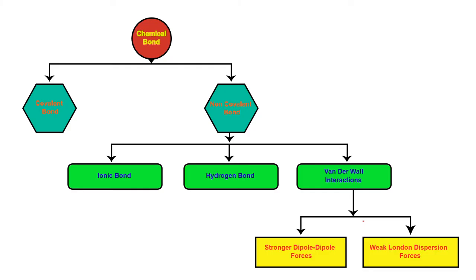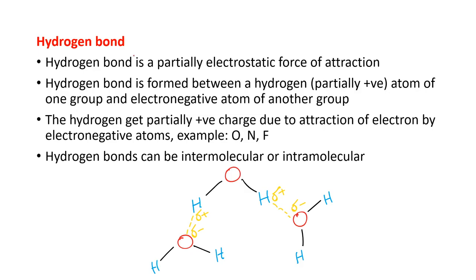This is a flow chart of the different types of chemical bonding we will discuss: covalent bonding, non-covalent bonding, and so on. In this lesson we are going to start about hydrogen bonding. Hydrogen bond is a partially electrostatic force of attraction.